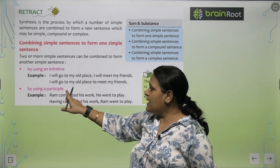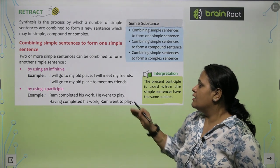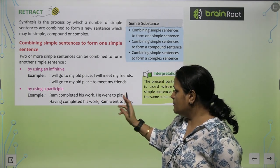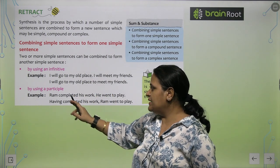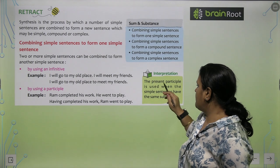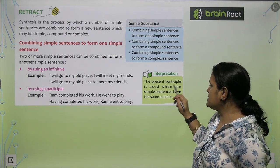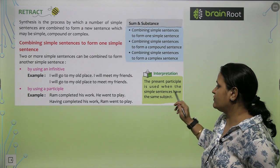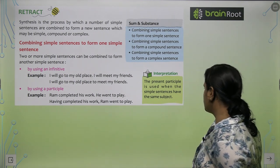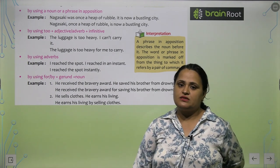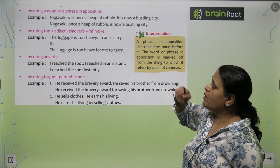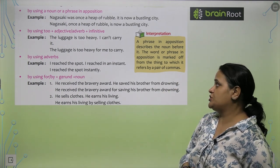By using a participle — for example: 'Ram completed his work. He went to play.' Combined: 'Having completed his work, Ram went to play.' The present participle is used when the simple sentences have the same subject — jab same subject hai, tab present participle use karenge.